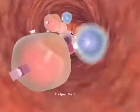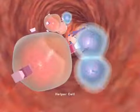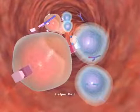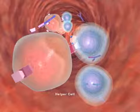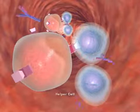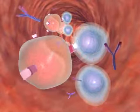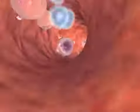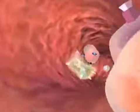T cells respond by transforming into helper, cytotoxic, or memory cells. T helper cells help B cells change into antibody-secreting cells. Without helper T cells presenting antigens to a B cell, the B cell does not respond.